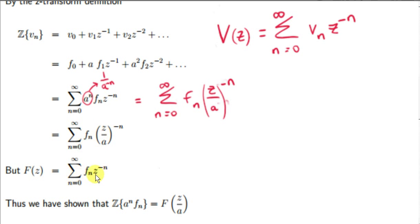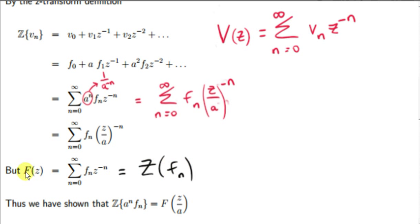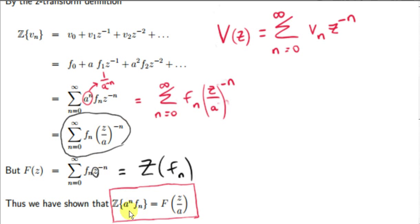If you look carefully at this expression, you will see it is none other than the definition of the Z-transform of f sub n, with z replaced by z over a. The Z-transform of f sub n can be written as big F of z, so we just replace z with z over a. This gives us the property: the Z-transform of a to the power of n times f sub n equals F of z over a.